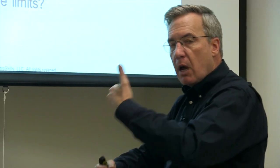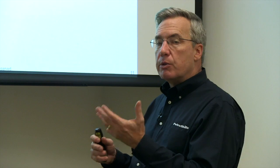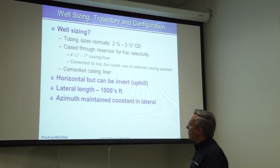Fracking is the key to the success of these shale plays — they wouldn't be successful if we hadn't learned how to drill a series of fracks along the lateral. Typical tubulars run in the well are between two and three-eighths and three and a half inch — probably more two and seven-eighths and three and a half. Casing sizes are four and a half to seven inch. Most companies are cementing their liners in the hole, but some still use external casing packers and the Packers Plus-type style. Most of these wells are drilled fairly horizontal, and once we set the azimuth, we try to drill perpendicular to the minimum horizontal stress of the reservoir.